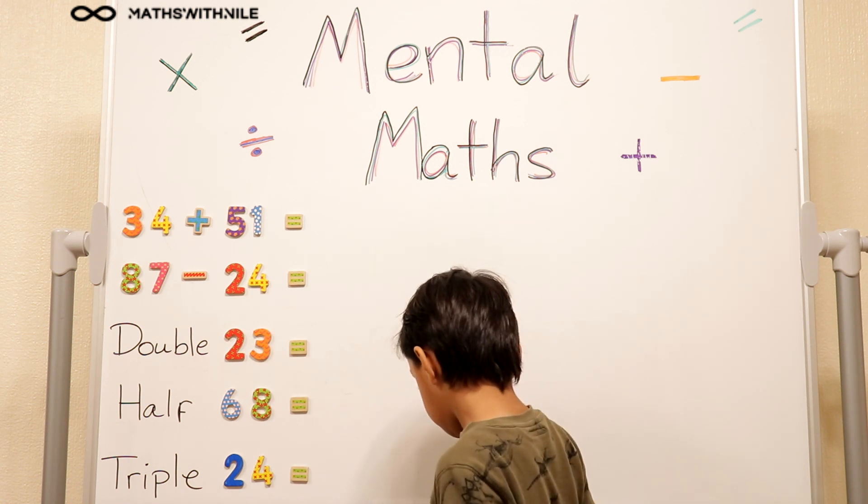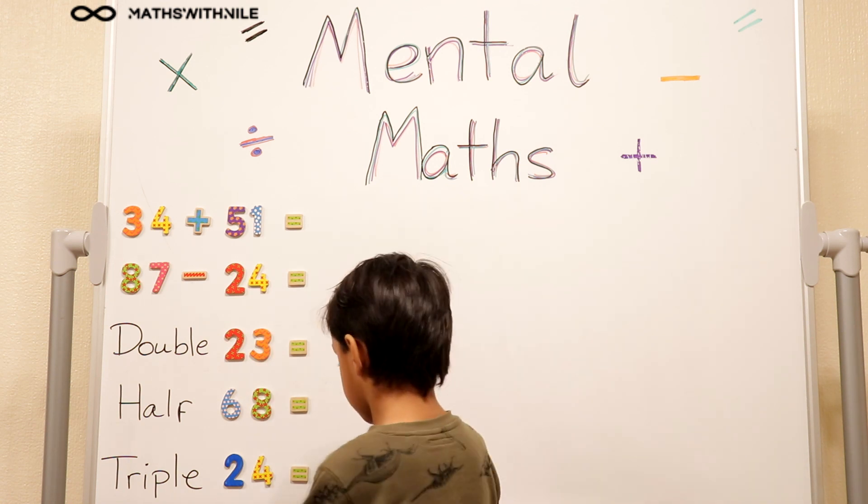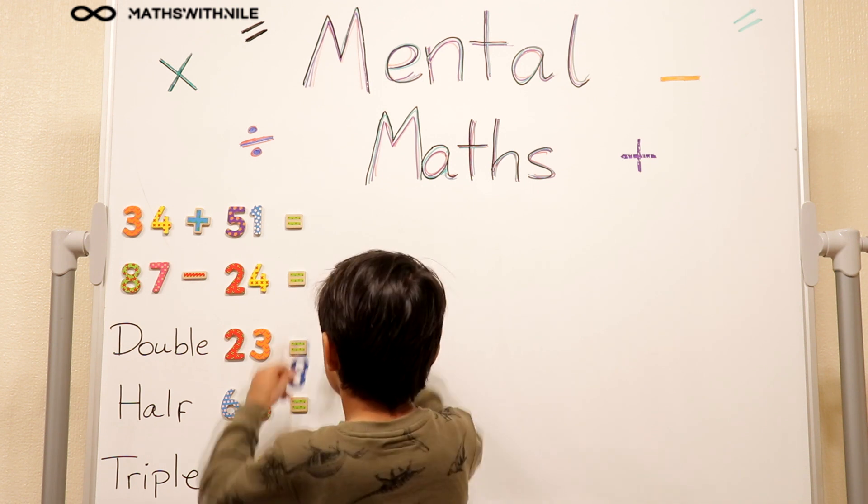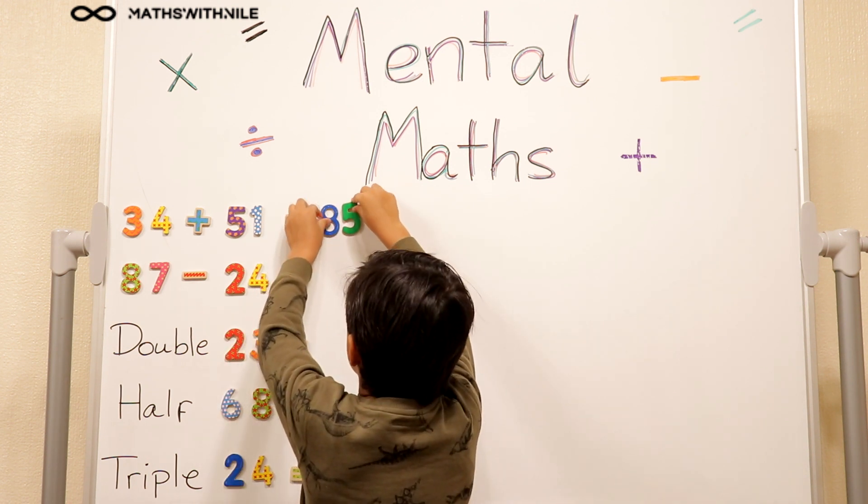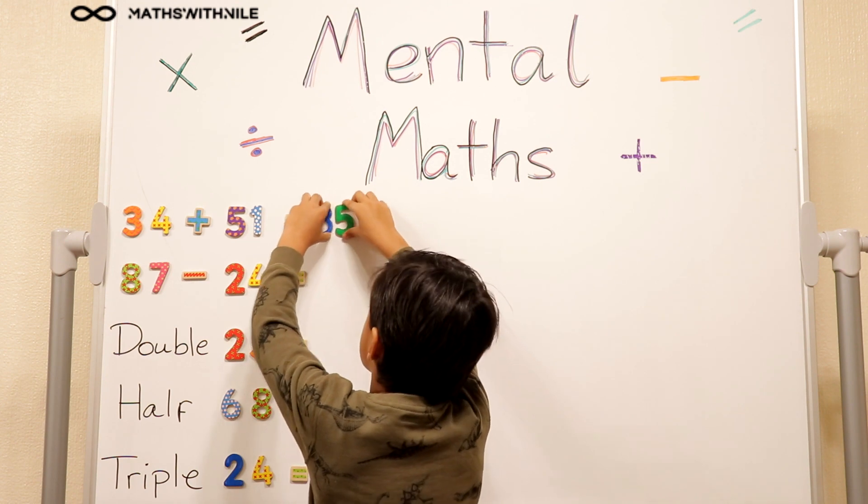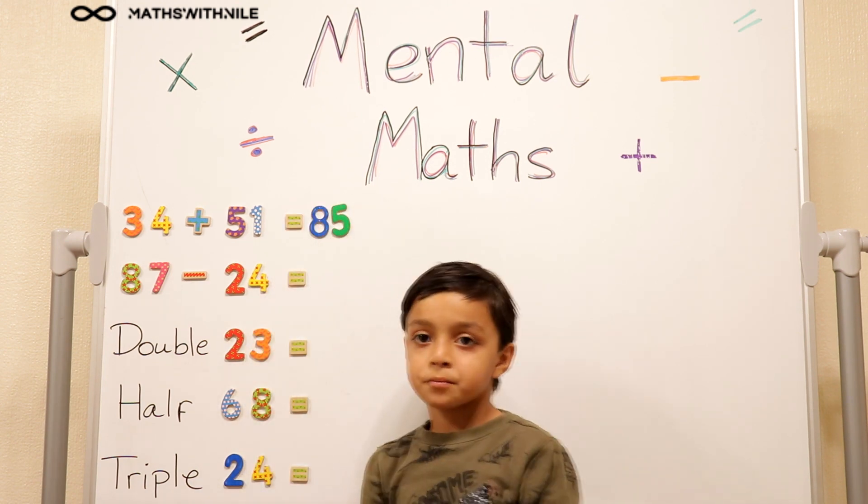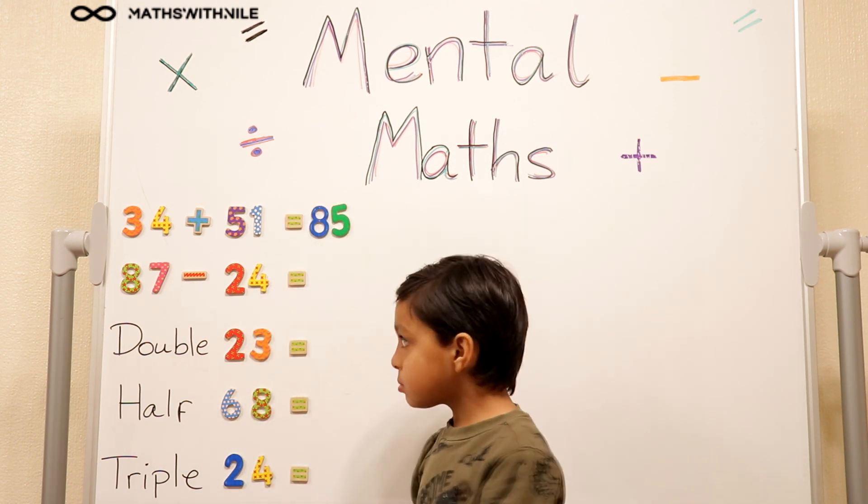Okay, so put the answer on the board. So you did 30 plus 50 equals 80, and 4 plus 1 equals 5. So can you use that same method to do the subtraction question?